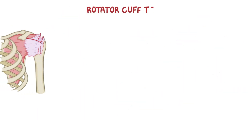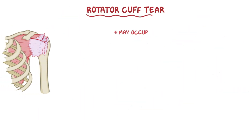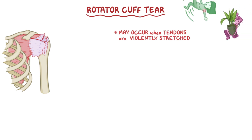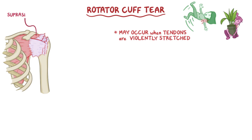A rotator cuff tear may occur when the tendons are violently stretched, like when you jerkily lift up something which is too heavy, or accidentally fall on an outstretched arm. This most commonly affects the supraspinatus tendon at its insertion on the greater tubercle of the head of the humerus, because it's under a lot of tension when the shoulder is abducted.